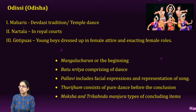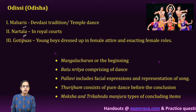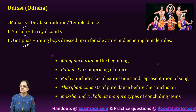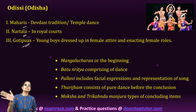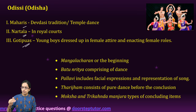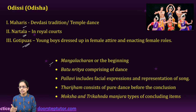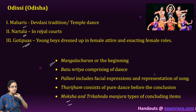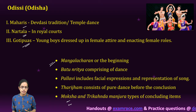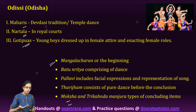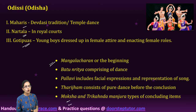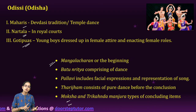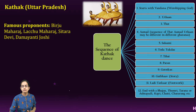Odissi has three important variants: the temple dance or Maharis; the Nartala or royal courts dance; and the Gotipuas — young boys dressed in female attire. The beginning stage is known as Mangalacharan and the concluding stage is Trikhand or Moksha. It is played with musical instruments of both North and South — sitar, flute, and violin.